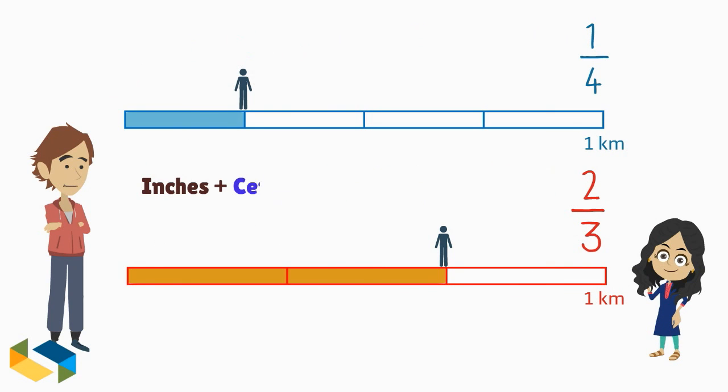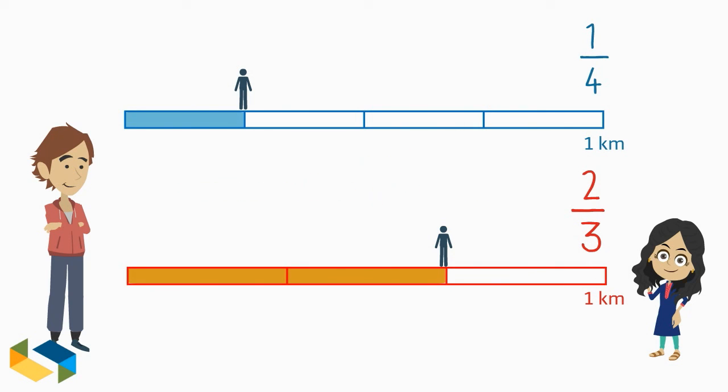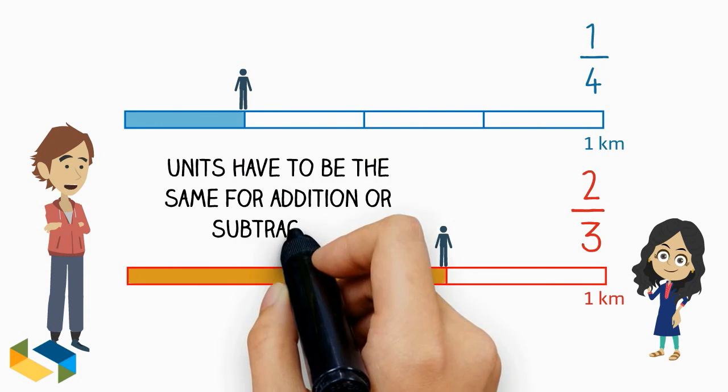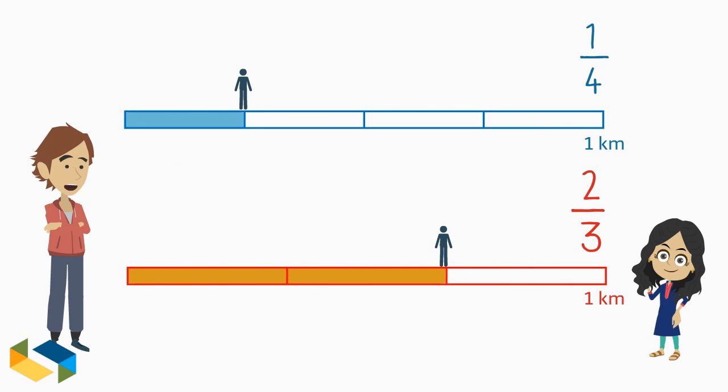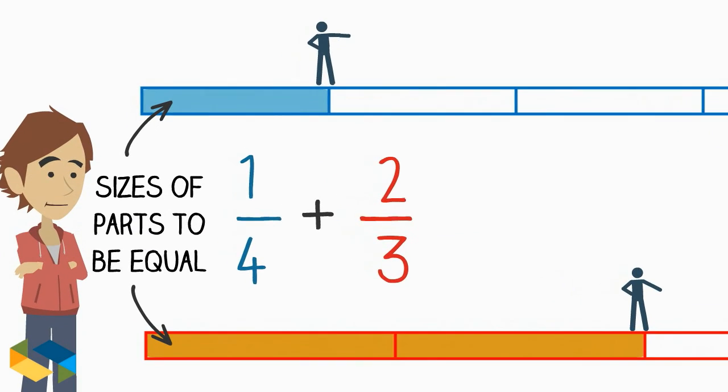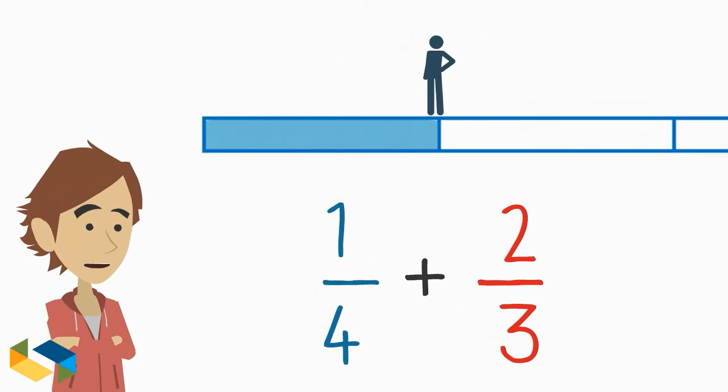For example, we can't add inches to centimeters, gallons to liters, kilograms to ounces, etc. The units have to be the same for addition or subtraction. Likewise, if we have to add fractions, the sizes of their parts have to be equal. In other words, the denominator has to be same. Let's see how this is done in our case here.